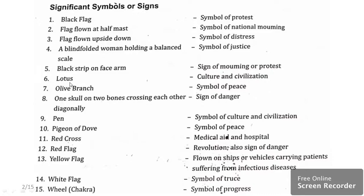The lotus indicates culture and civilization, and the symbol of a pen also indicates culture and civilization. An olive branch indicates a symbol of peace, and a skull on two crossed bones indicates a danger sign.